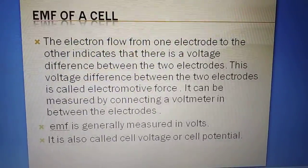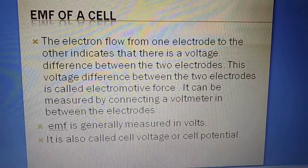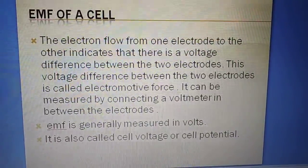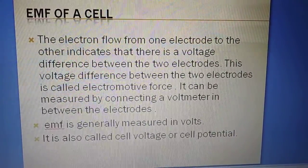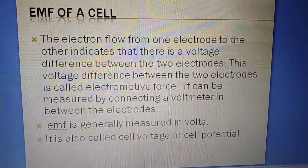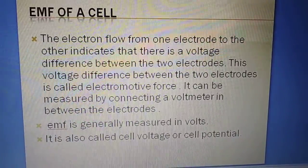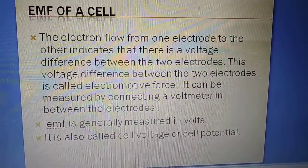In my last video I discussed galvanic cell. In that video we learned that a galvanic cell consists of two half cells. One is the oxidation half cell where oxidation takes place, and another is the reduction half cell where reduction takes place.